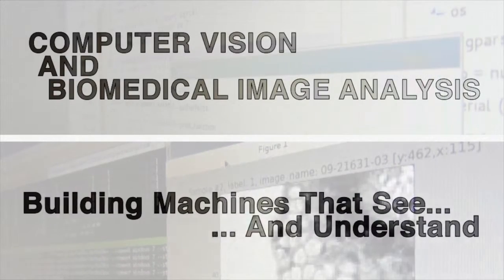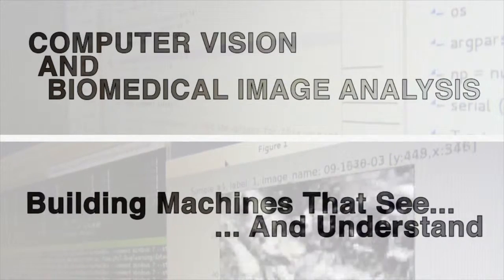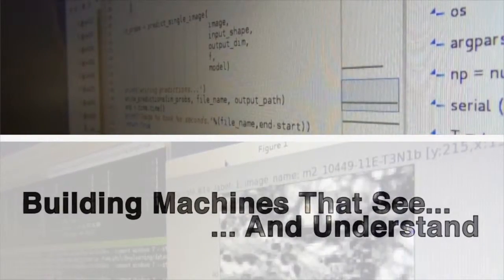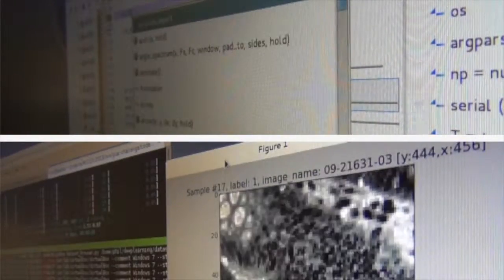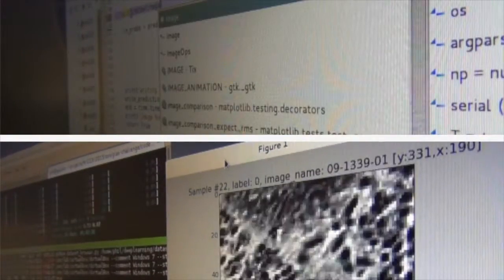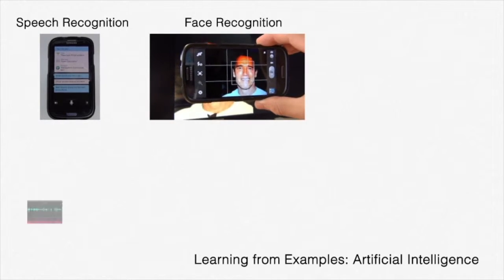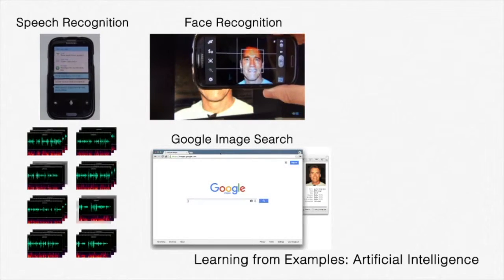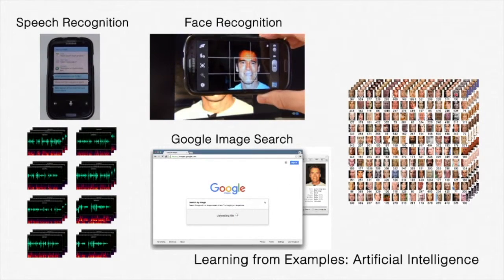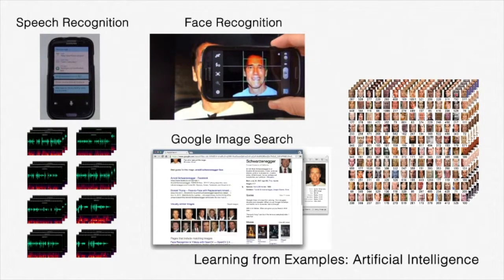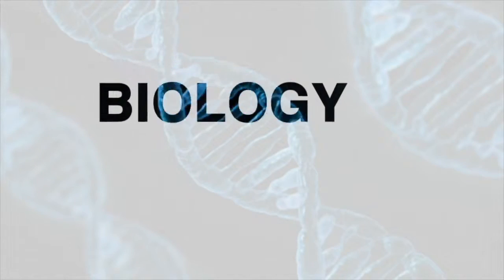Computer vision research is focused on building intelligent programs that understand the content of images and videos using methods of digital image processing and artificial intelligence. Speech and face recognition in our smartphones, Google's image search — all these systems use intelligent algorithms that learn from examples how to recognize audio or image data.